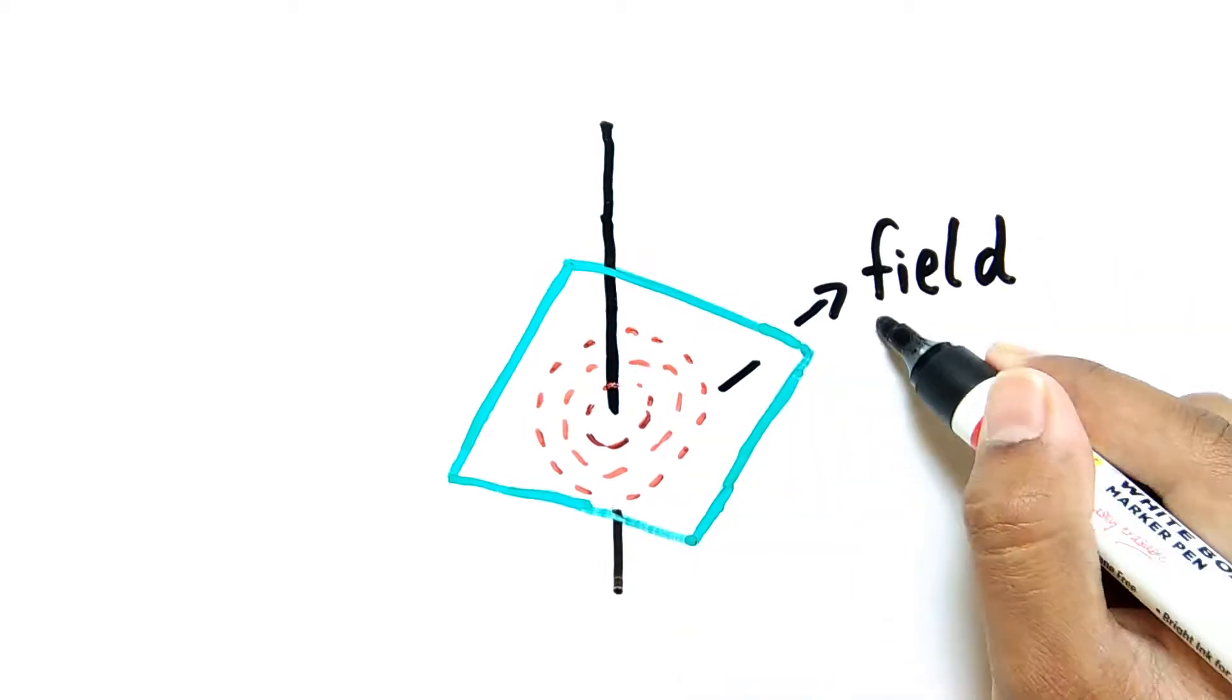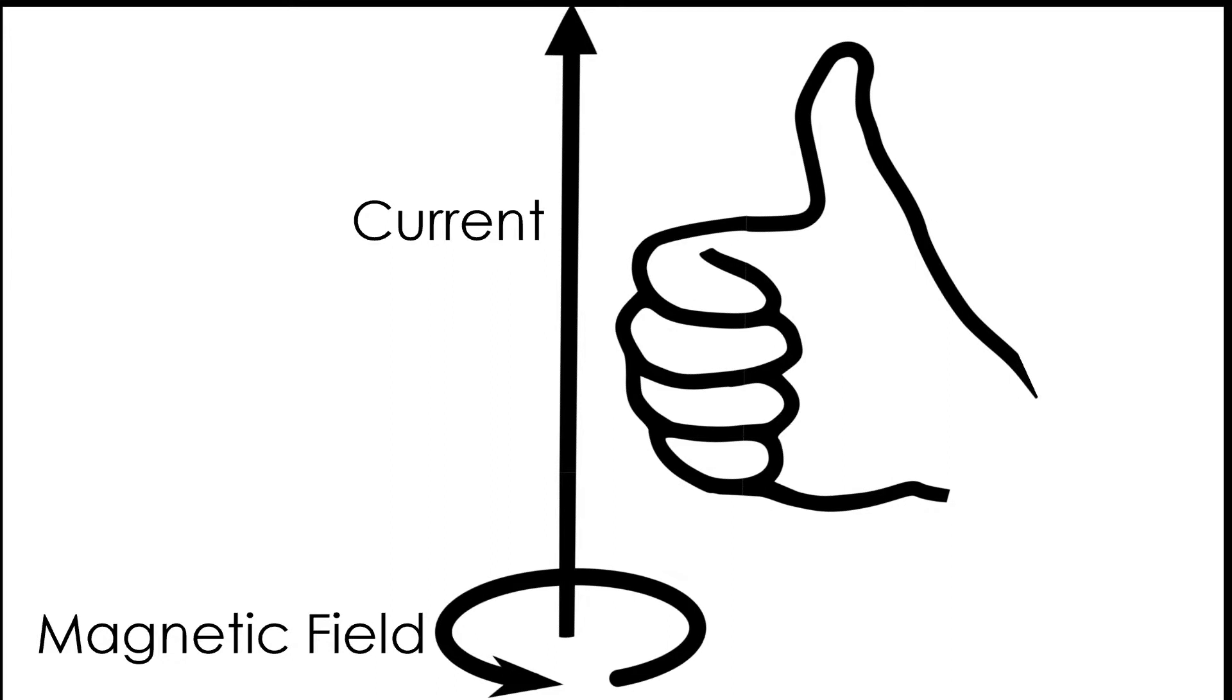The right hand thumb rule says that if the direction of the electric current, which is given by the thumb, is upwards, then the direction of the magnetic field will be anticlockwise, which is given by the remaining four fingers of your right hand, and vice versa.